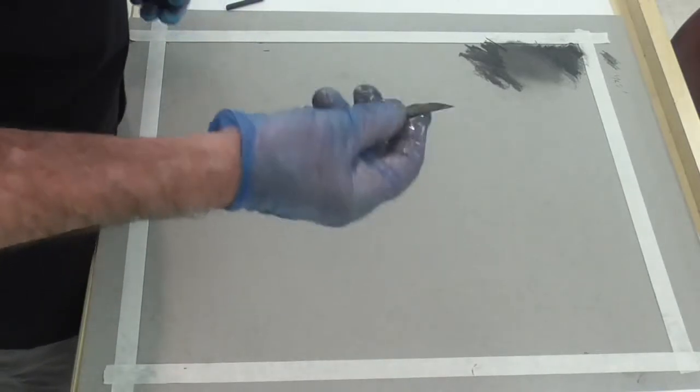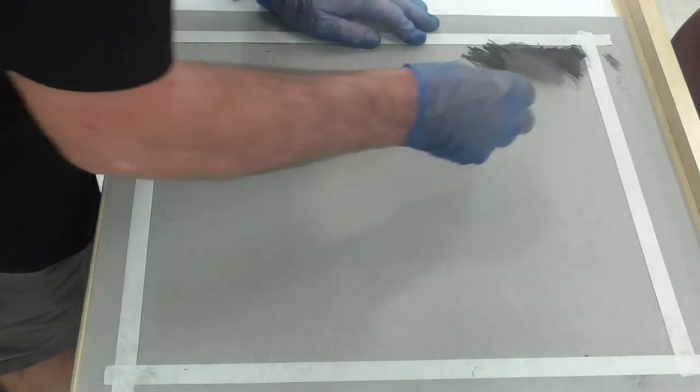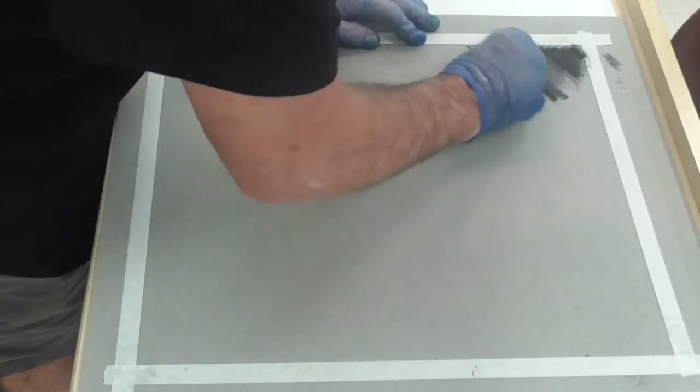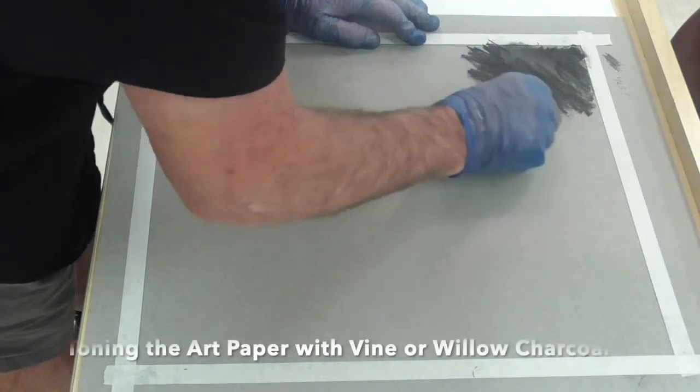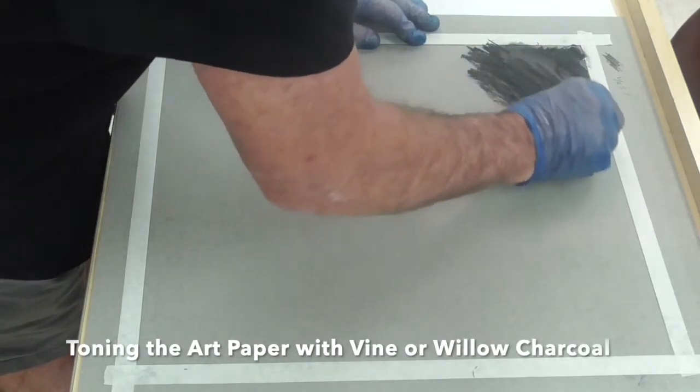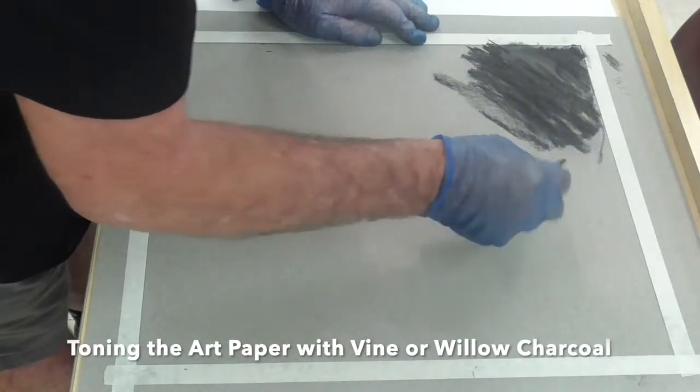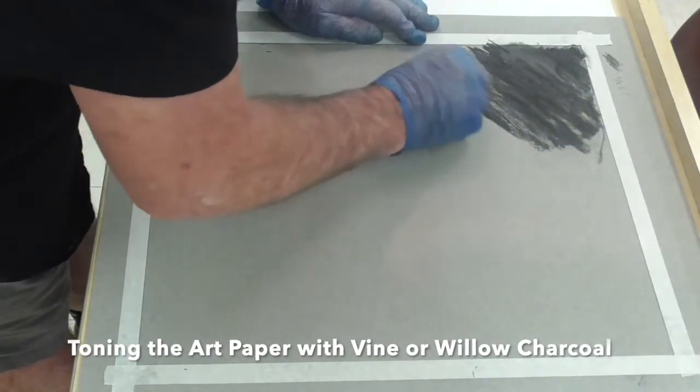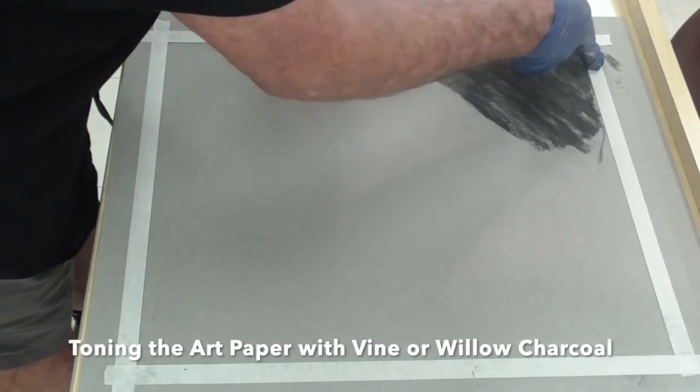Now I'm going to take vine charcoal or willow charcoal, basically the same thing. And I'm putting it everywhere. I'm going to fairly lightly drag across the surface of the Canson paper. I've checked to make sure that this is the side that I want with a charcoal pencil.